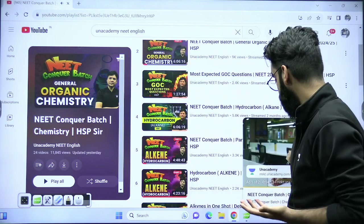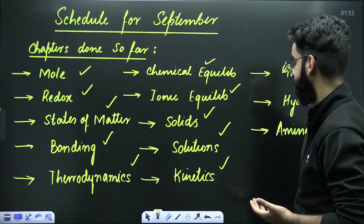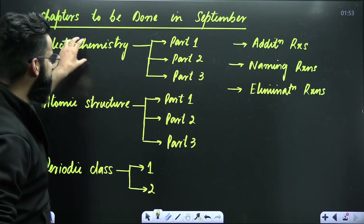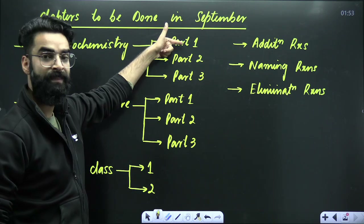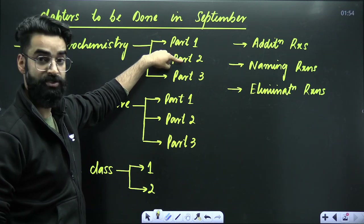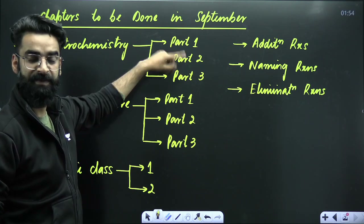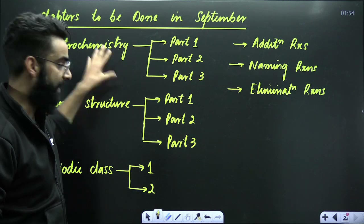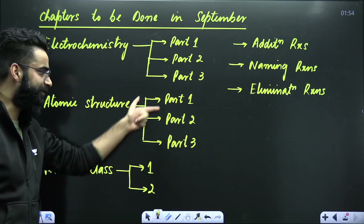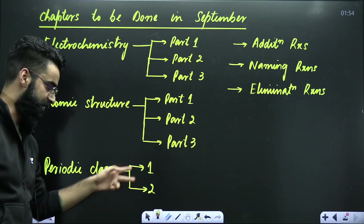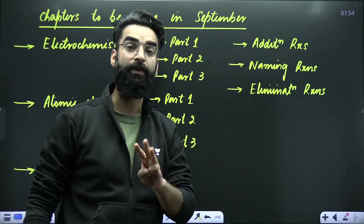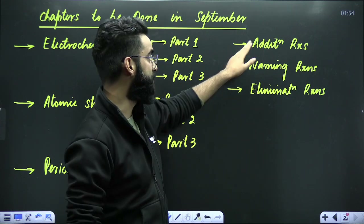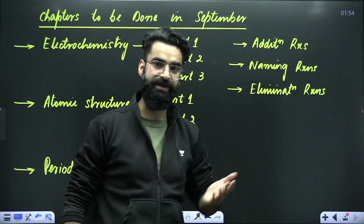So what is the plan for this particular month? What chapters are we going to cover? We are going to cover almost 3 to 5 chapters. Electrochemistry starts today — part 1 at 6 PM on Sunday, part 2 on Tuesday at 6 PM, and part 3 on Saturday at 6 PM. After completing electrochemistry, I'll move to atomic structure, which will again be completed in 3 sessions. Then periodic classification, done in 2 sessions. HSP Sir will be covering addition reactions, naming reactions, and elimination reactions in organic chemistry.